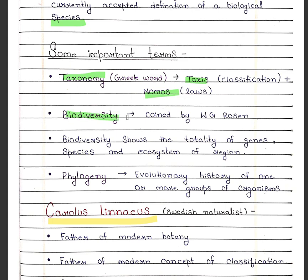Biodiversity was coined by W.G. Rosen. The number of species described ranges between 1.7 to 1.8 million and this is known as biodiversity. Biodiversity shows the totality of genes, species and ecosystems of a region.